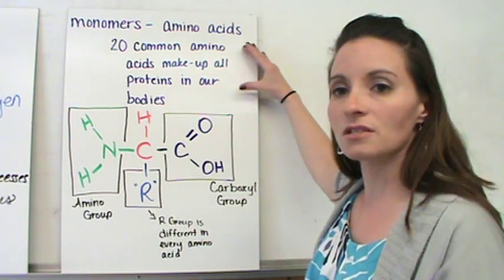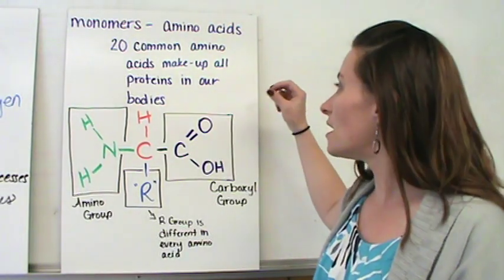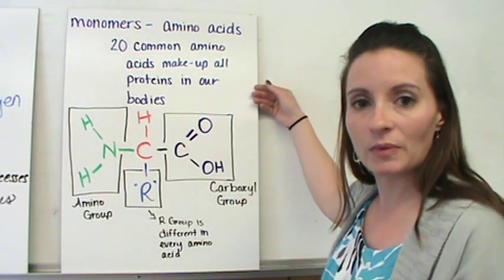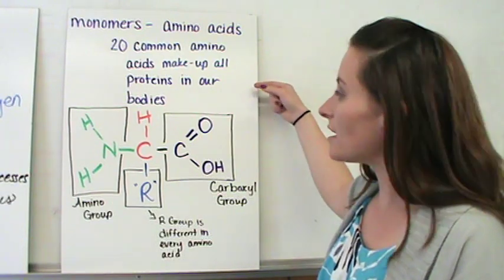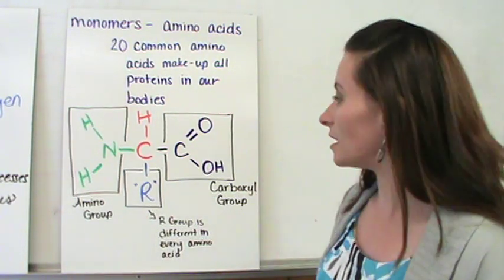So, these 20 common amino acids make up all the proteins that are in our body by doing different shapes and forms, and we'll get into that in a minute.